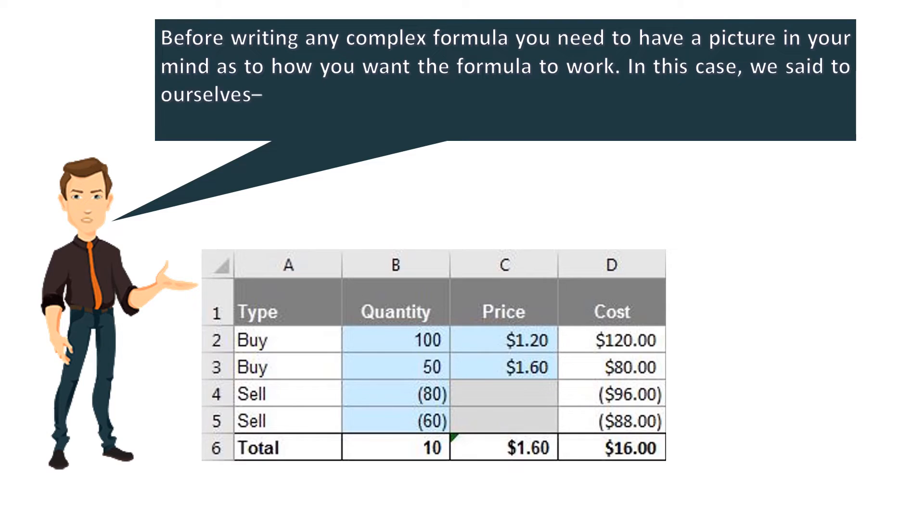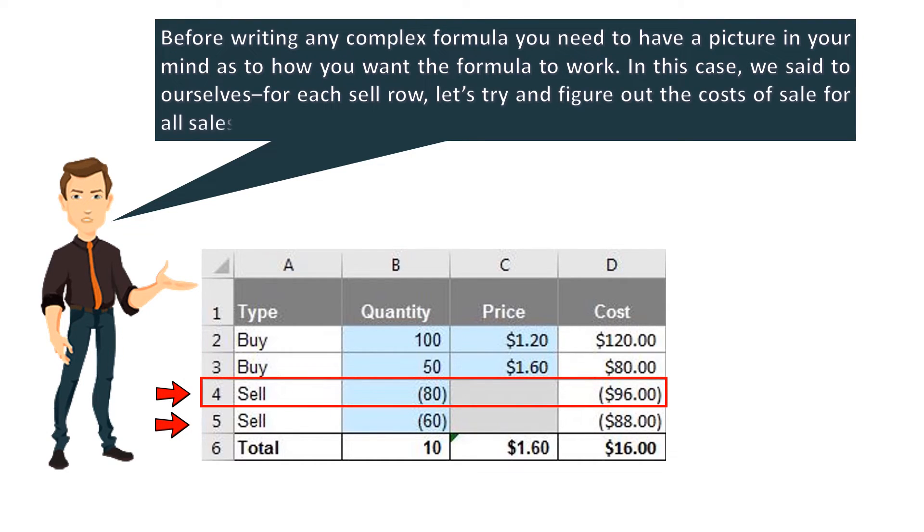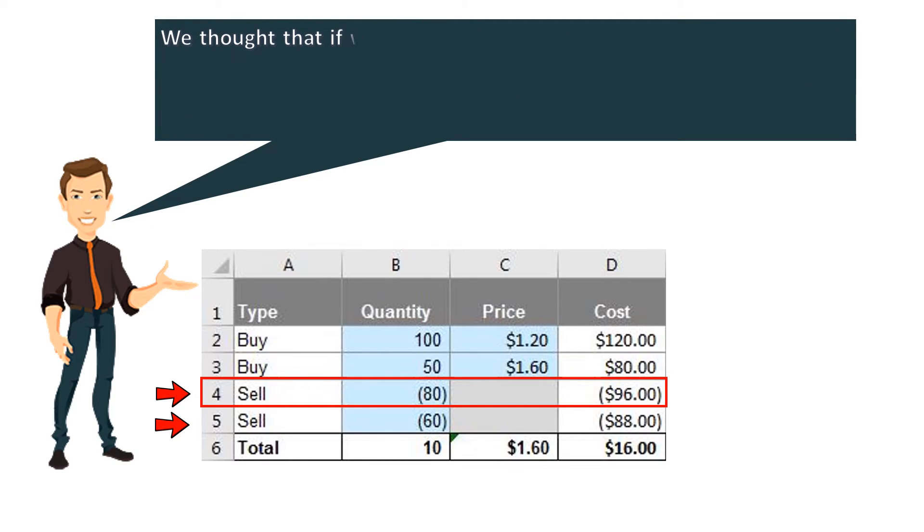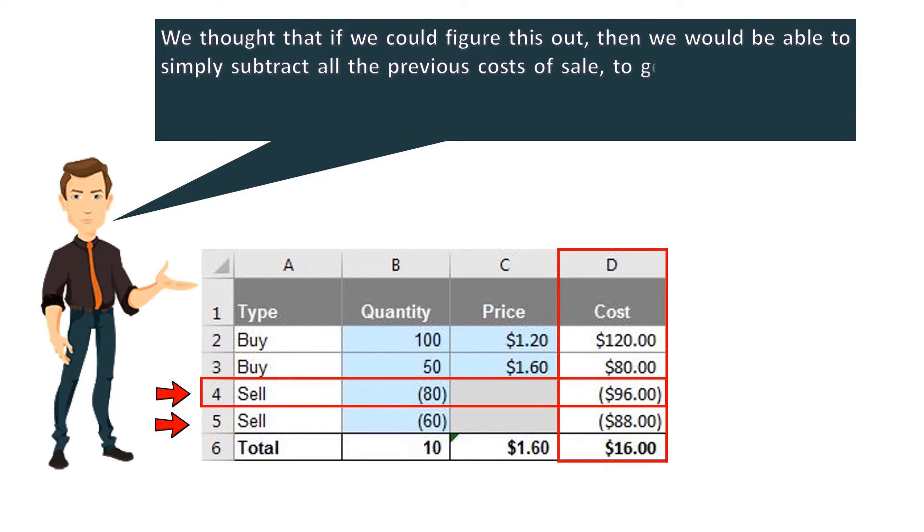In this case, we said to ourselves for each sale row, let's try and figure out the costs of sale for all sales to date. We thought that if we could figure this out, then we would be able to simply subtract all the previous costs of sale, to get the actual cost of sale for the row in question.